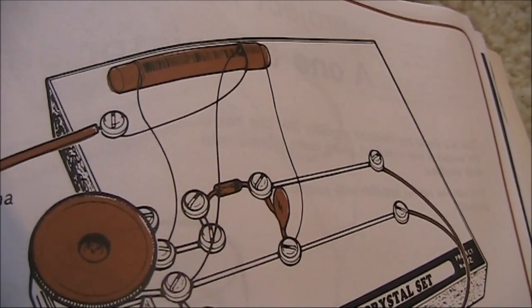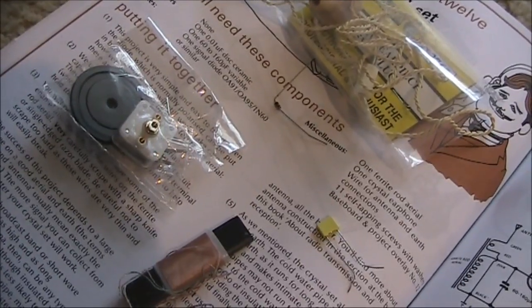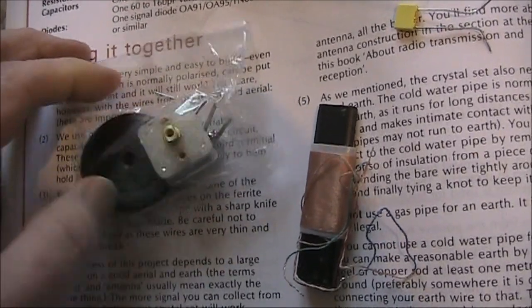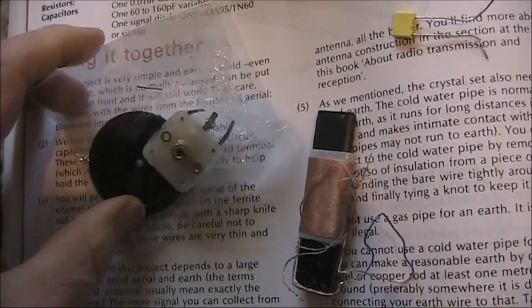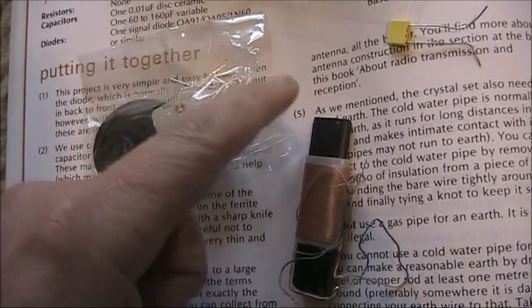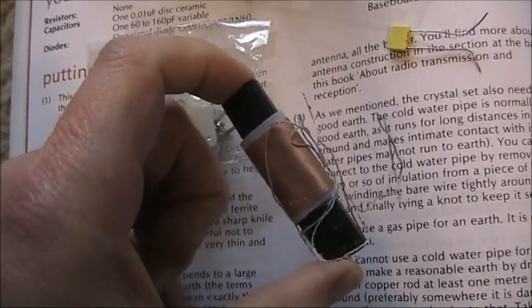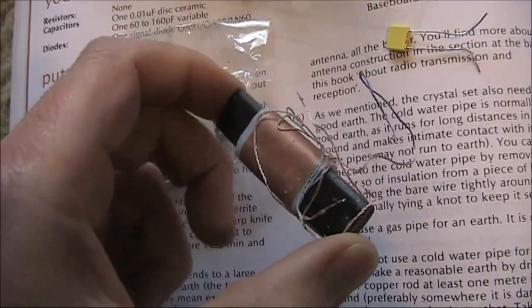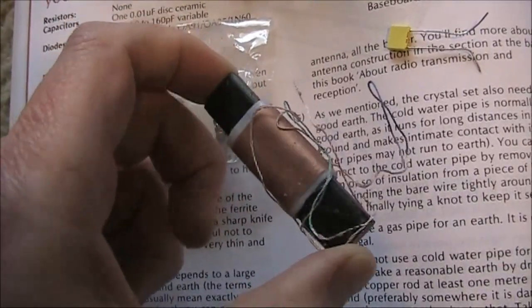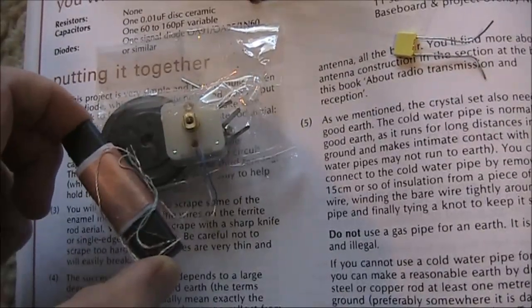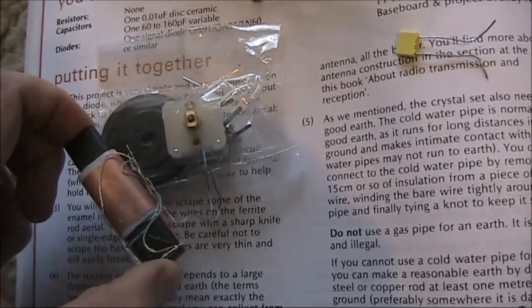These are the main components in the crystal set. The variable capacitor allows you to select the various stations. It's used in conjunction with this coil of wire that's mounted on a ferrite rod, which improves its effectiveness.